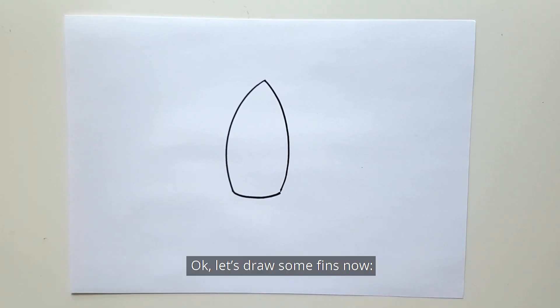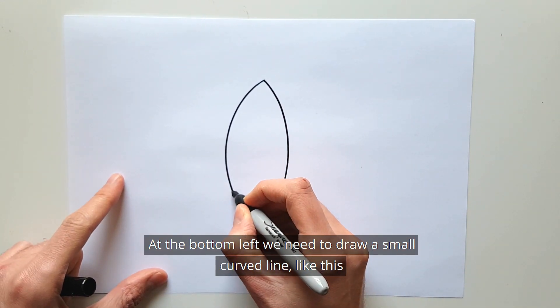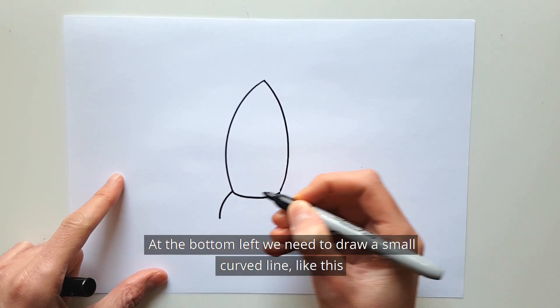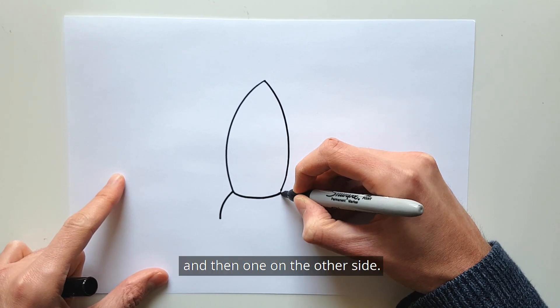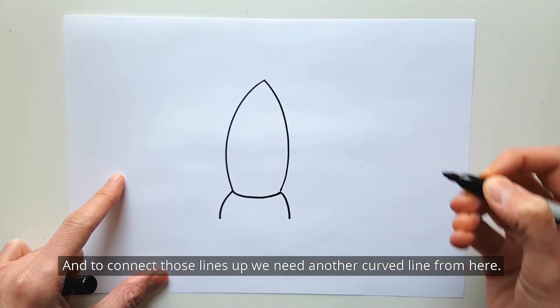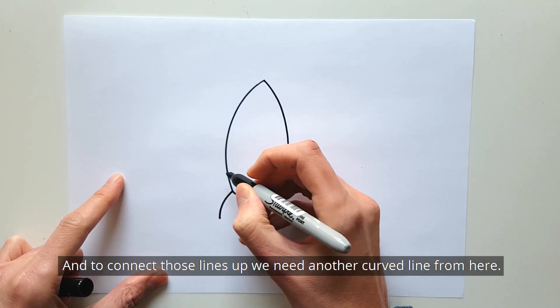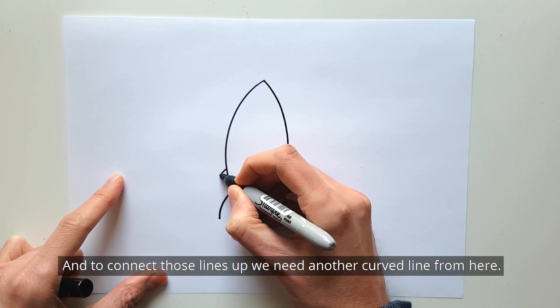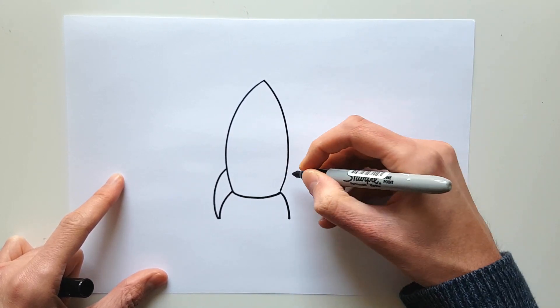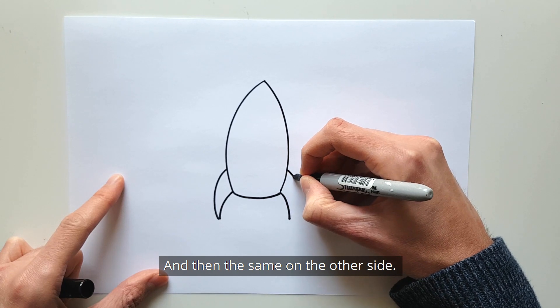OK, let's draw some fins now. At the bottom left we need to draw a small curved line like this, and then one on the other side. And to connect those lines up we need another curved line from here, and then same on the other side.